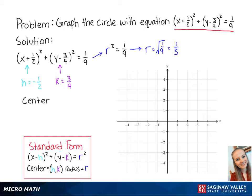So now we know that the center is at negative one-half, three-fourths, and that the radius is equal to one-third.